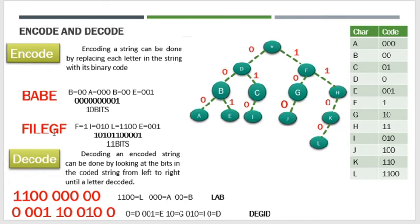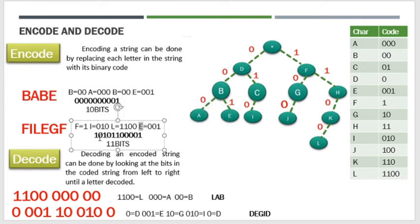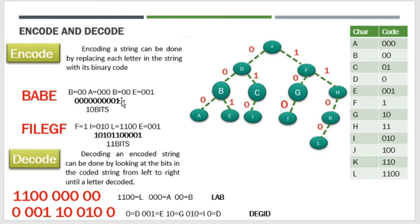Meron tayong file GF problem. Unang gagawin — ilista ninyo muna lahat ng code ng bawat character. Ang F ay 1, ang I ay 0-1-0, ang L ay 1-1-0-0, ang E ay 0-0-1. Pag nakuha na ninyo yung code, pagsamahin na ninyo yung mga binary. Itong nakahighlight — ito na yung final answer, ito na yung na-encode natin.